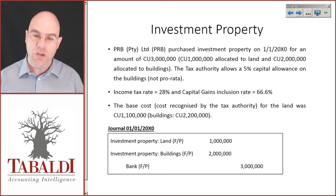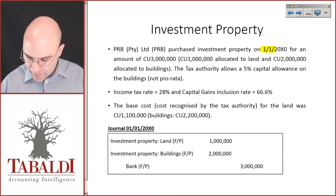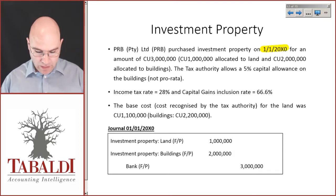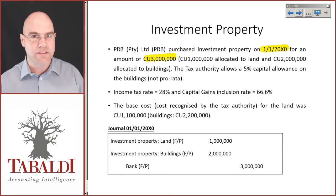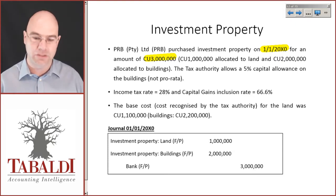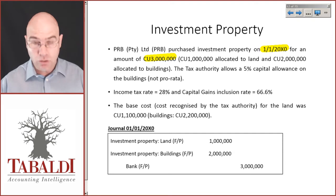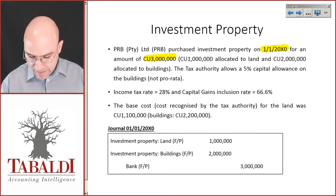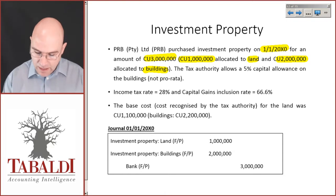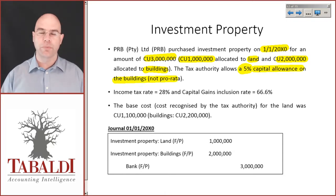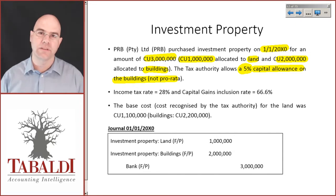PRB purchased investment property on the 1st of January 20x0 for three million CU — currency units, which could be your local functional and presentation currency. We've allocated one million to land and two million to buildings. The tax authority allows a five percent capital allowance on the buildings, not pro rata — i.e., five percent for the entire year.